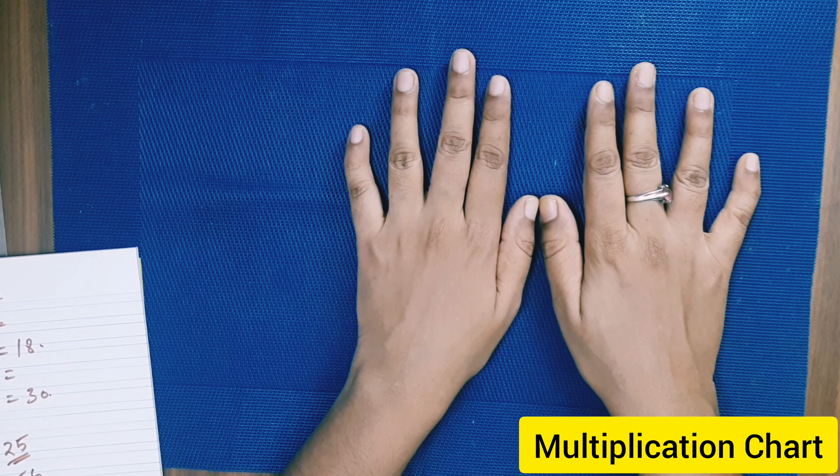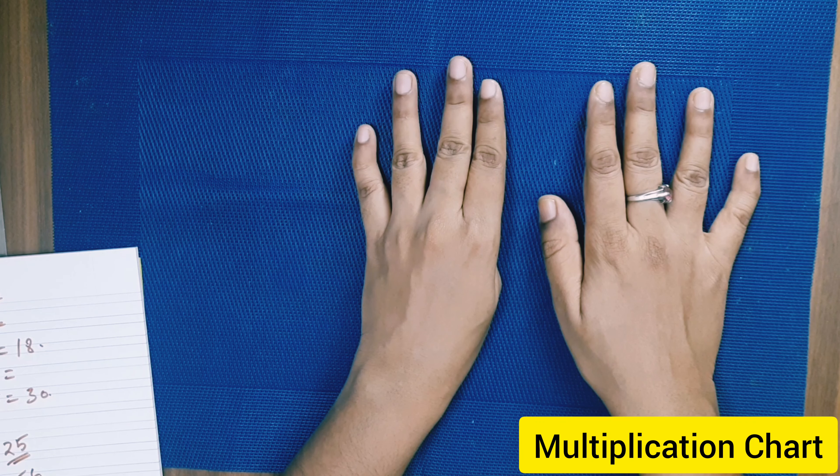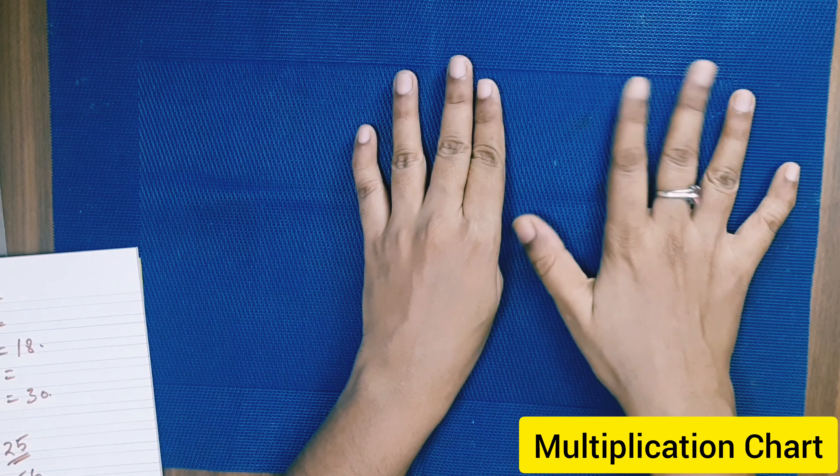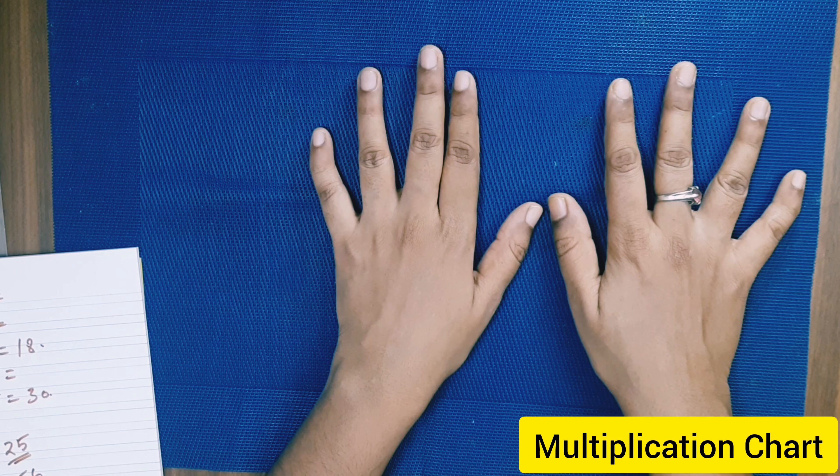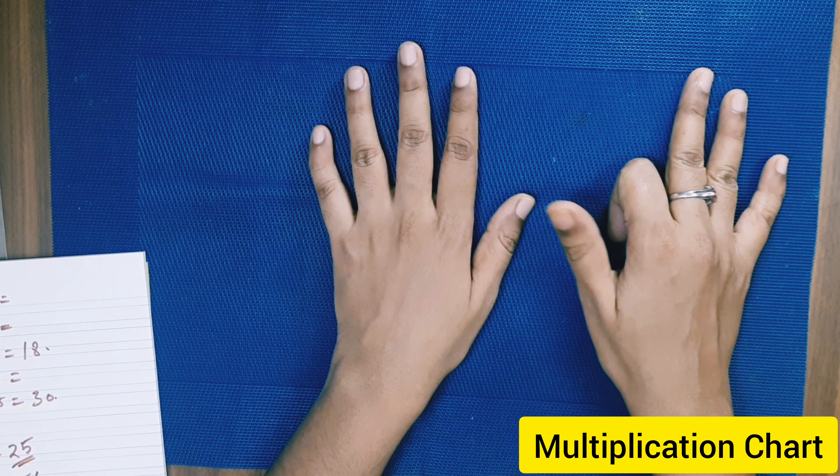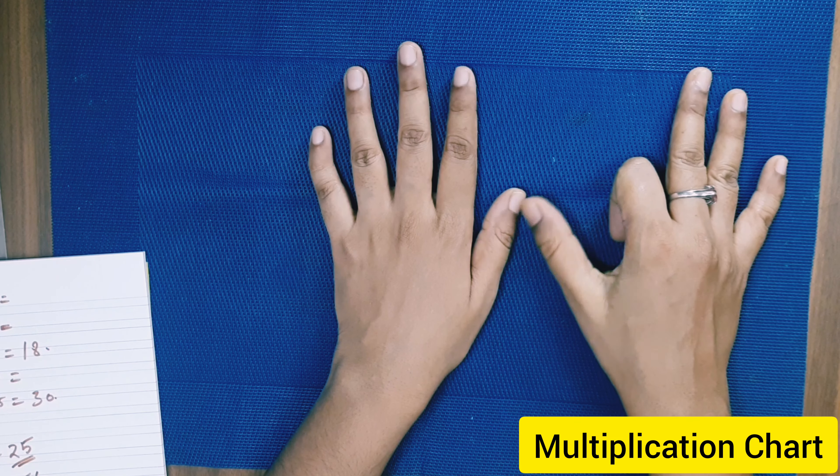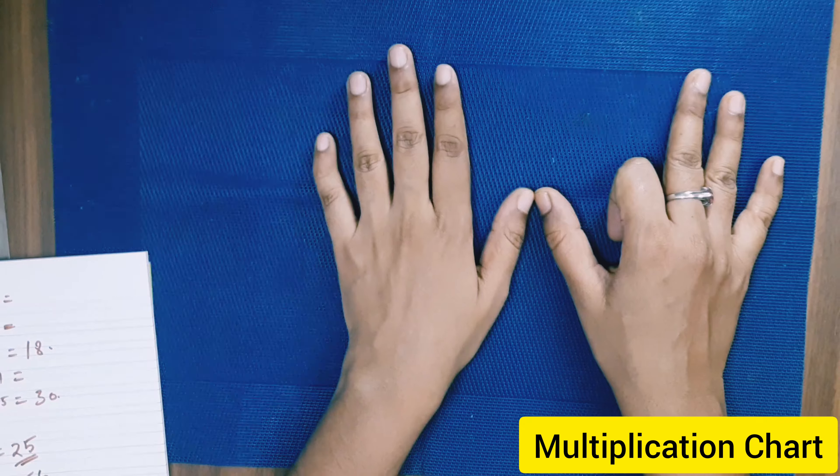And also for 9 multiplied by 5, ask the child to fold the fifth finger. So here it's 4 and here it's 5, so 45 is the answer. For 9 multiplied by 7, fold this finger in the seventh position. So the answer is, this side from this side it is 6, and the other side 3. So the answer is 63.